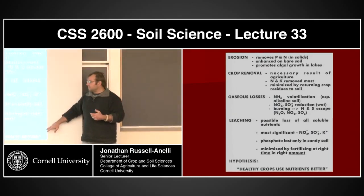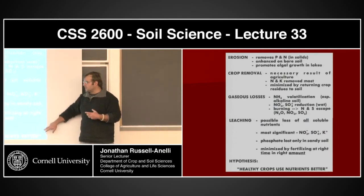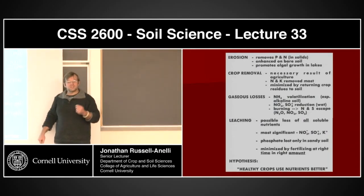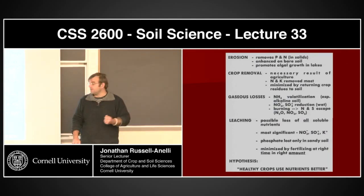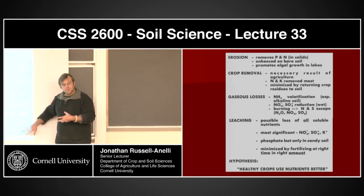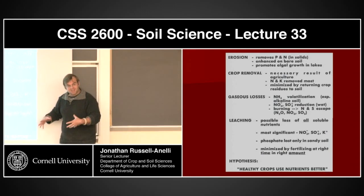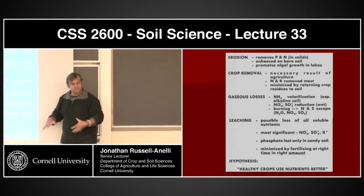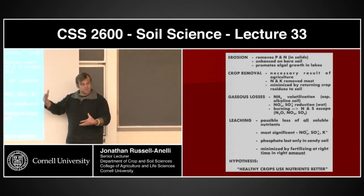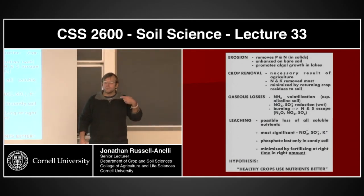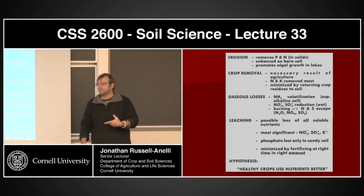This is all premised on one hypothesis that sort of holds a lot of these things together: healthy crops use nutrients better. If we're trying to minimize loss from the system, one of the things we want to do is maximize nutrient uptake into the plants, because the more the plants are taking up, the less is leaving the system. Now, granted, we're going to harvest, but potentially we're putting the residue back. So why would healthy plants use those nutrients better, or reduce the amount of loss from the system — with the exception of the harvest?